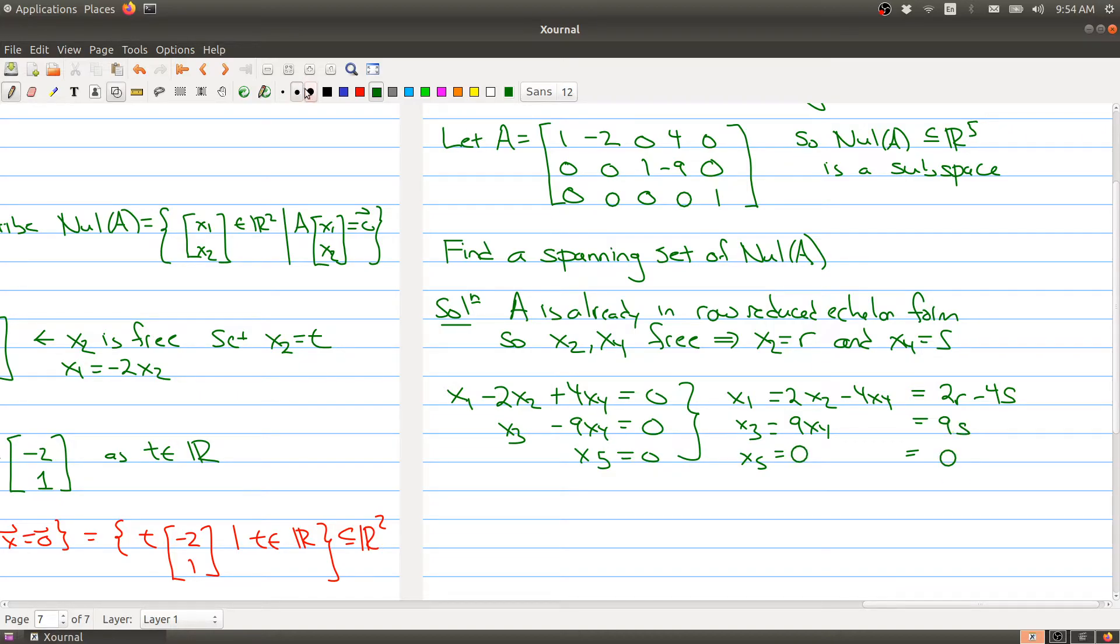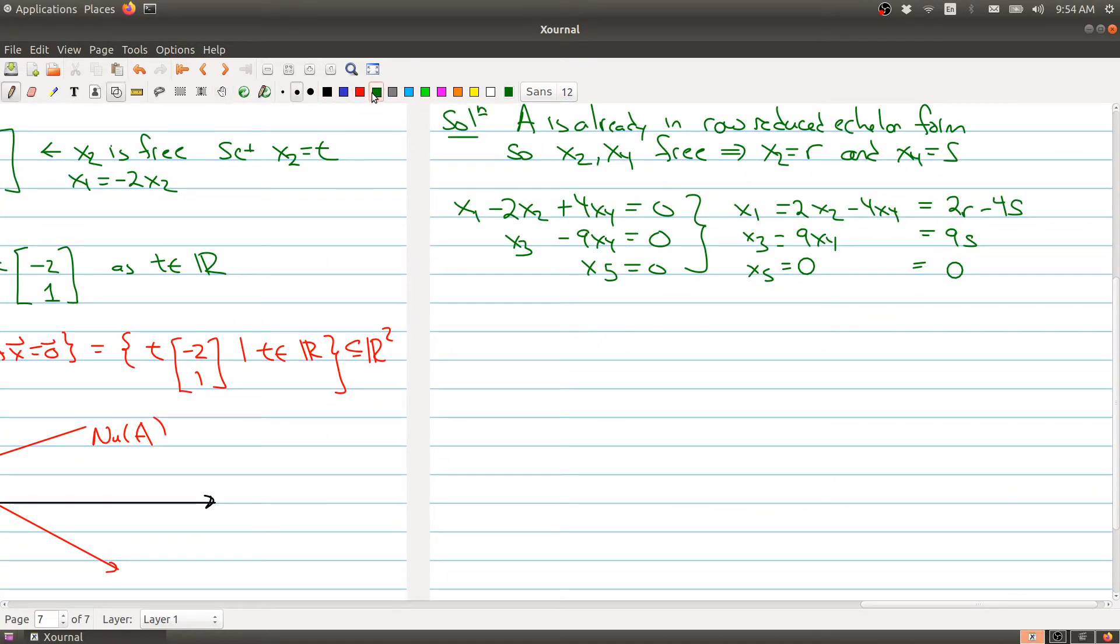Let's rewrite this. We have that x is in the null space of A if and only if the vector x looks like x1, x2, x3, x4, and x5 looks like this.